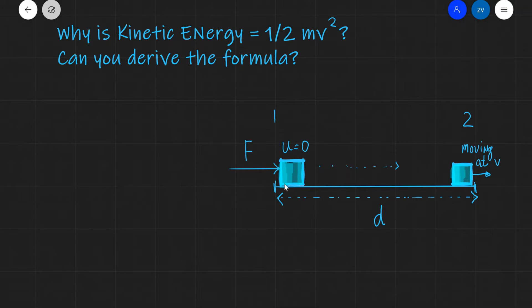Imagine that we have an object that will apply a force F over a certain distance which we call d. Initially the speed of the object u is equal to 0, and when the object goes from position 1 to position 2 it accelerates to a speed v.